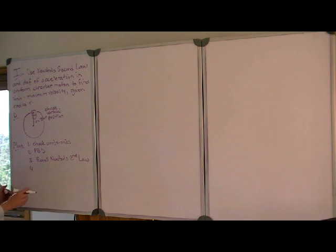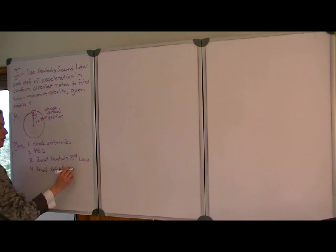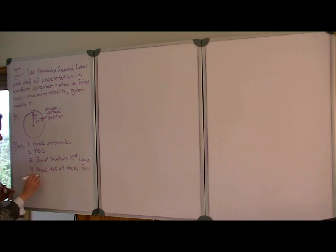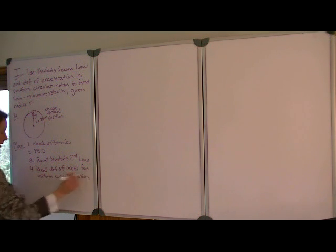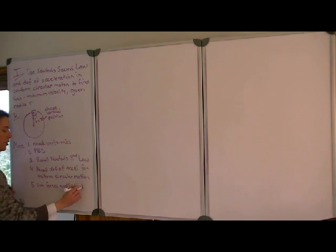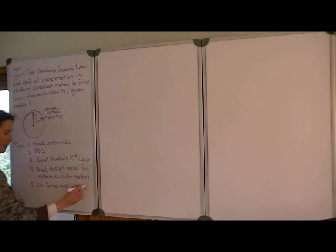Now, we aren't asked about acceleration. We're asked about a minimum velocity. So we also need to recall the definition of acceleration for uniform circular motion, which relates acceleration to velocity and the radius. Then we would be ready to substitute the forces and the results from step 4 into Newton's second law, which we stated in step 3.